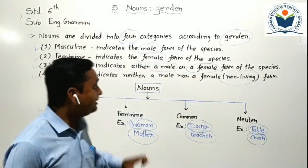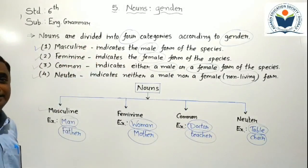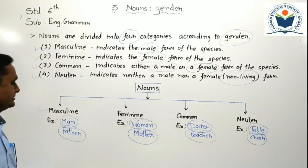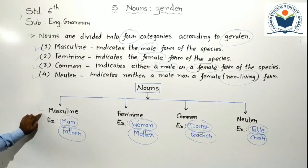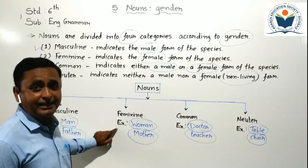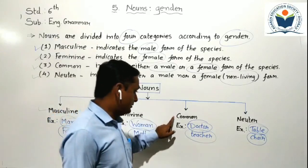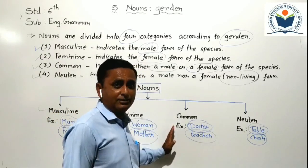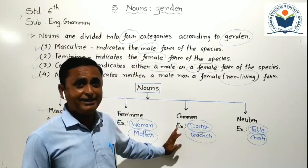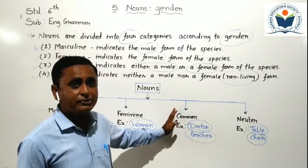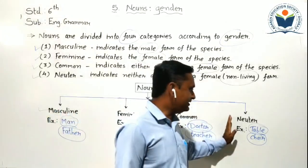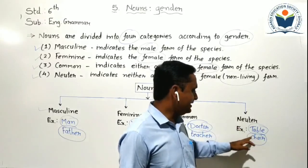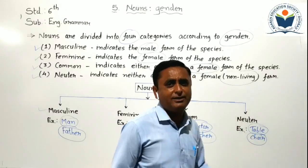Now students understand about the four types of gender in English grammar. Nouns have four types of gender. Keep in mind: masculine is related to male; feminine is related to female; common gender is related to both — either male or female, but the living thing must be there; and neuter gender is related to non-living things, for example table, chair, board.